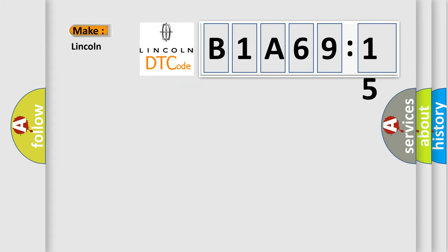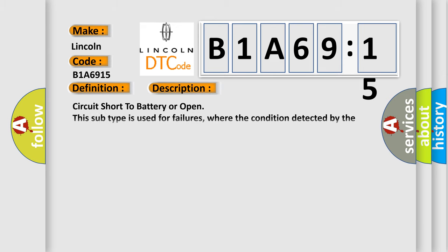So, what does the Diagnostic Trouble Code B1A6915 interpret specifically for Lincoln car manufacturers? The basic definition is LIN communication. And now this is a short description of this DTC code: Circuit short to battery or open. This subtype is used for failures where the condition detected by the control module is the same for either indicated failure mode.